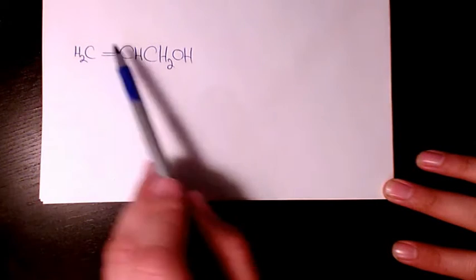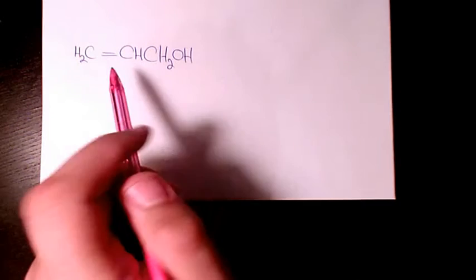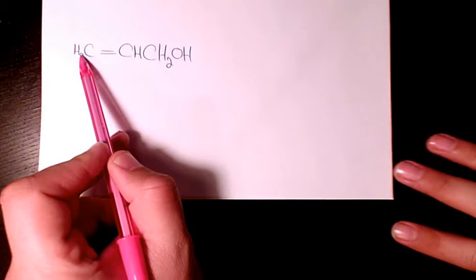As you see here, we have a double bond and we have a hydroxyl group here. So we have three carbons, so we are dealing with propanol.